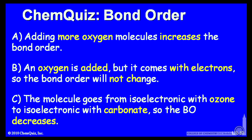Let's look at possible explanations for each of the answers. A: adding more oxygen molecules increases the bond order. B: an oxygen is added, but it comes with electrons, so the bond order will not change. Or C: the molecule goes from isoelectronic with ozone to isoelectronic with carbonate, so the bond order decreases, just as it does from ozone to carbonate. Consider those three answers and make a selection.